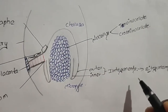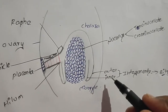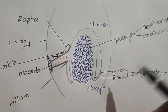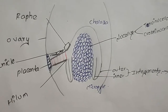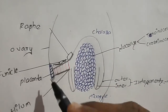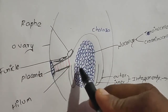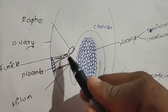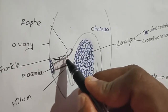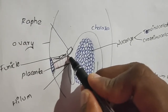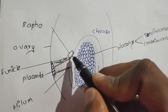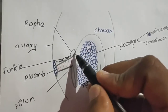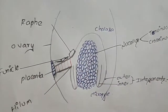In gymnosperms, only one integument is present, and such integument type is known as unitegmic. The place where the funicle is attached to the body part is known as the hilum, and the funicle extends towards the body part. That extended part is known as the raphe.